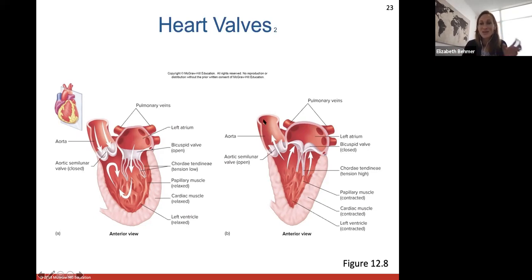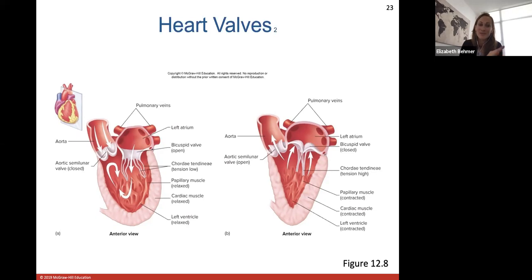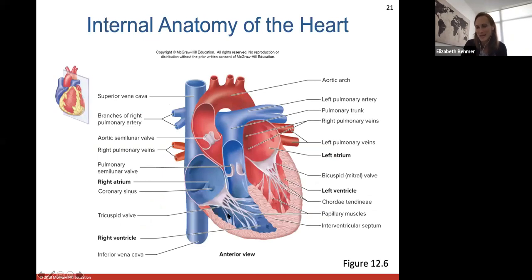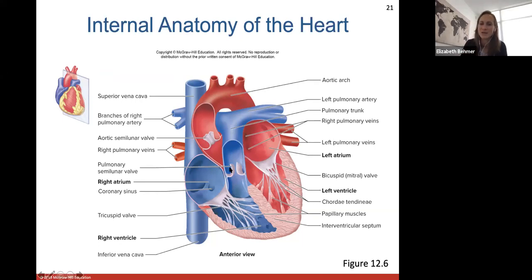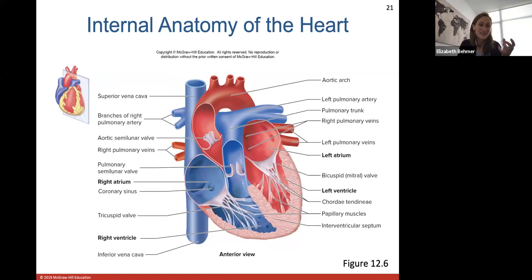The heart valves open and close in sequence. For example, the aortic semilunar valve is closed when the bicuspid valve is open — blood flows from the left atrium to the left ventricle. Then the bicuspid valve closes as pressure builds in the left ventricle, the papillary muscles contract keeping the bicuspid valve tightly closed, and then the aortic semilunar valve opens so blood goes out the aorta to body tissues. The closing of these valves makes the audible lub-dub sound. The 'lub' — the first heart sound — is the closing of the AV valves, and the 'dub' — the second heart sound — is the closing of the semilunar valves.